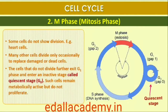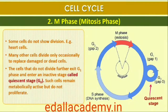Some cells in the adult animals do not appear to exhibit division — for example, heart cells — and many other cells divide only occasionally, as needed to replace cells that have been lost because of injury or cell death. These cells that do not divide further exit G1 phase to enter an inactive stage called the quiescent stage, G0, of the cell cycle. Cells in this stage remain metabolically active but no longer proliferate unless called on to do so depending on the requirement of the organism.